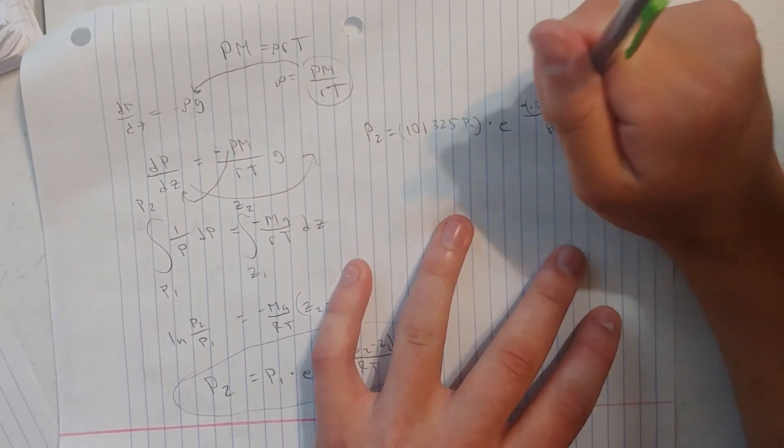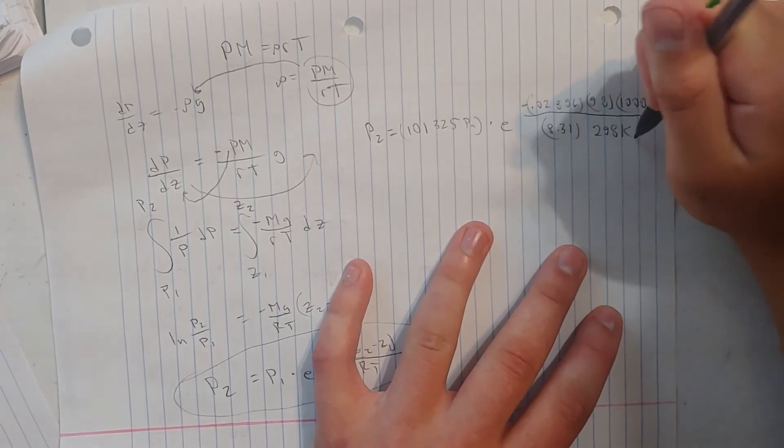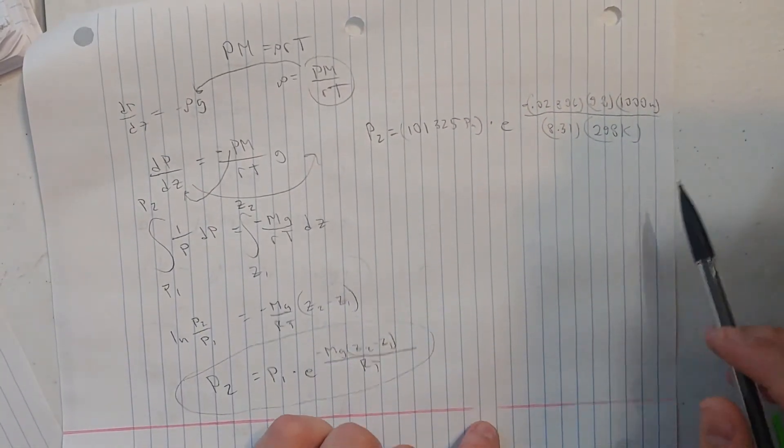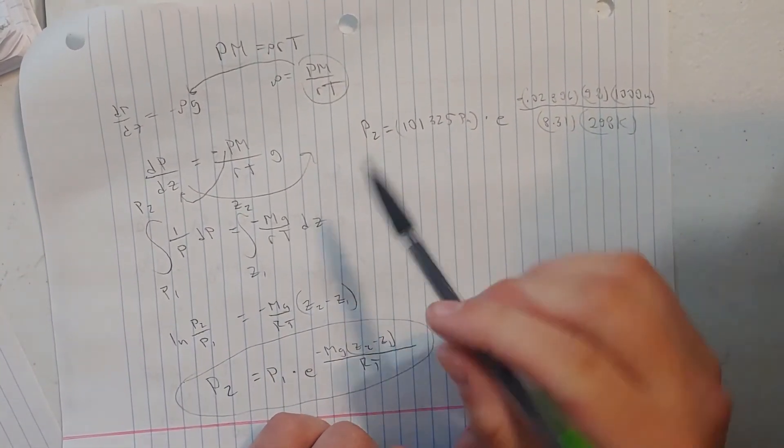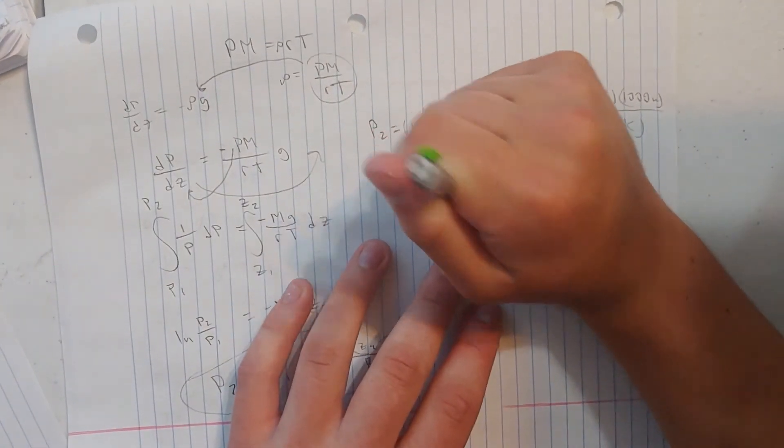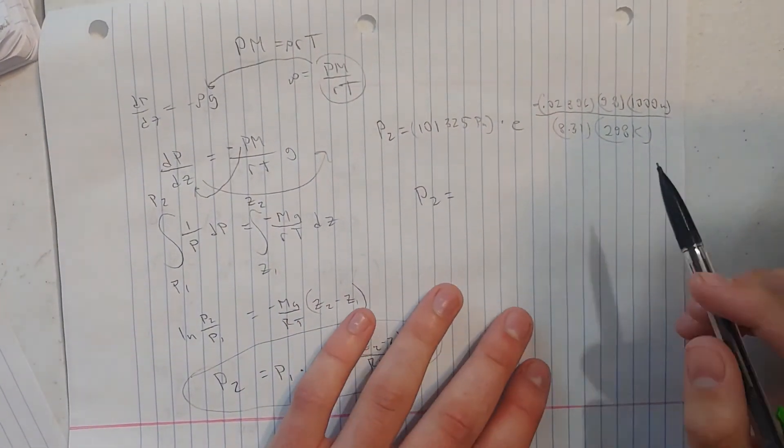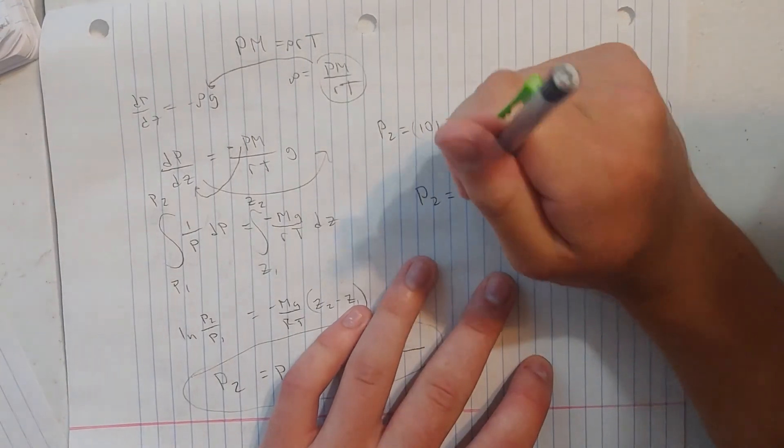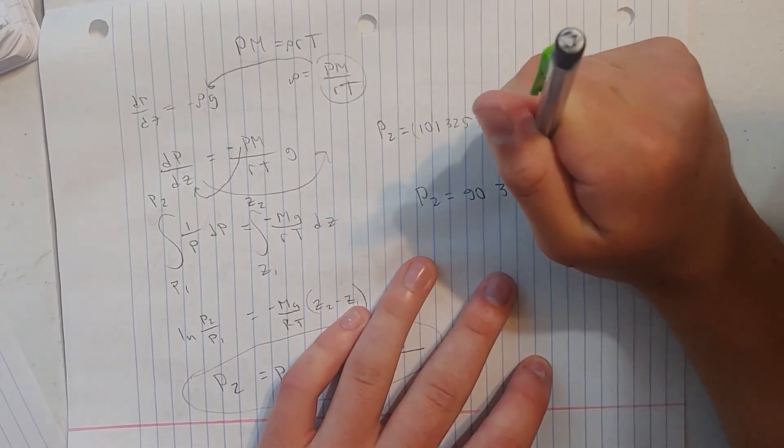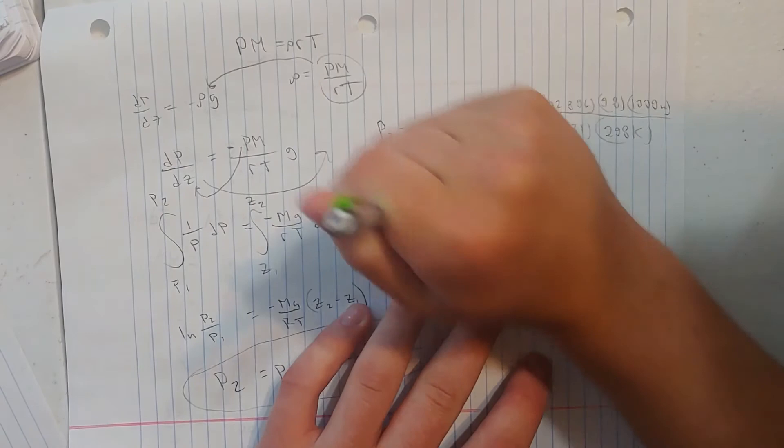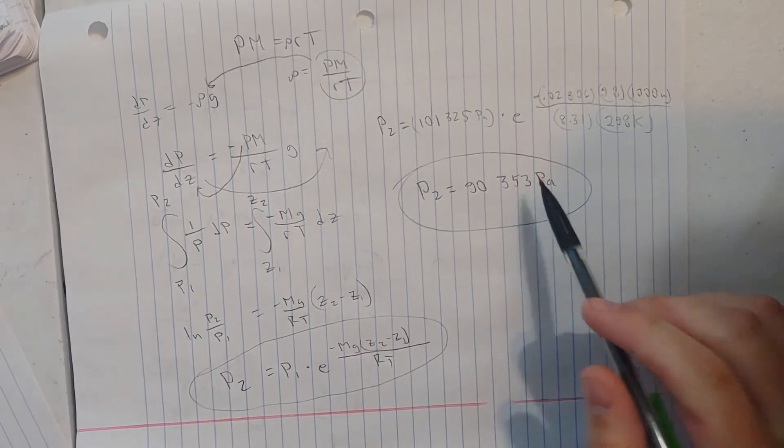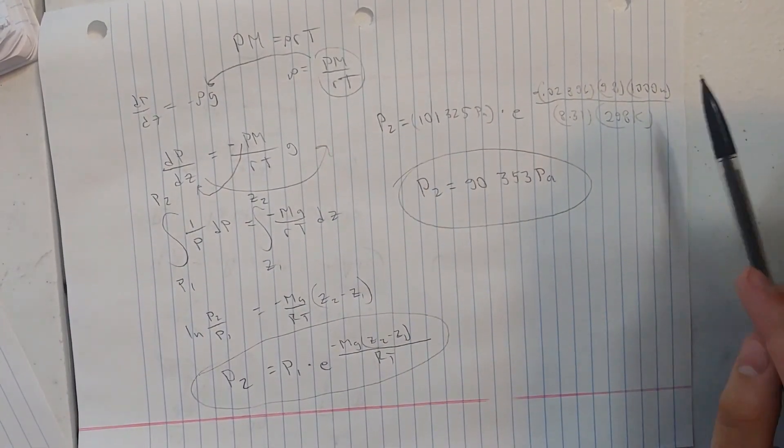Our gas constant is 8.31. The temperature I'm choosing is 298 kelvin. So by plugging all this in and solving for p2, you're going to find that p2, 1,000 meters above sea level, is going to be 90,353 pascals, which is less than our sea level pressure of 101,325.